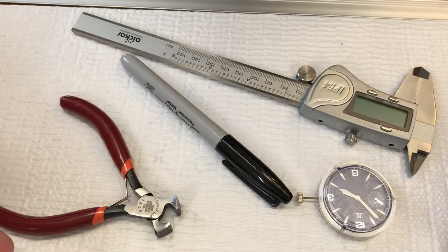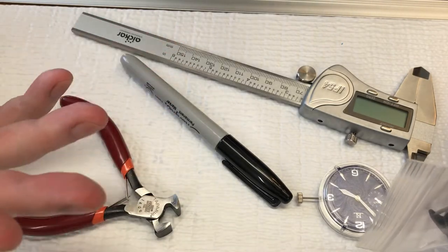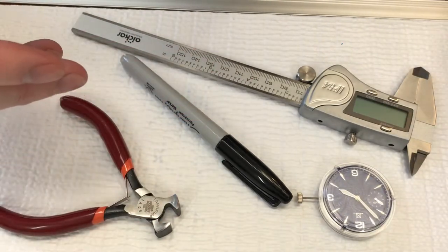Usually the stems will come in like 16 millimeter, which is really the standard size. You can get longer stems at like 20 millimeter. So a lot of times if you're making your own custom build, you may have to trim it depending on the movement and the case.